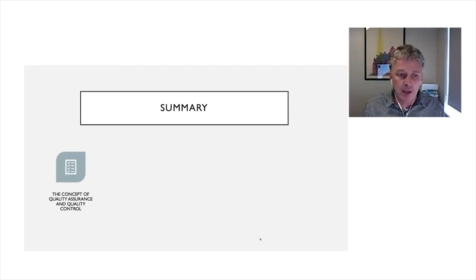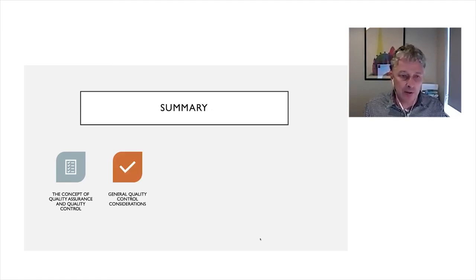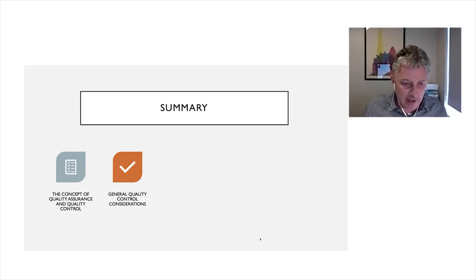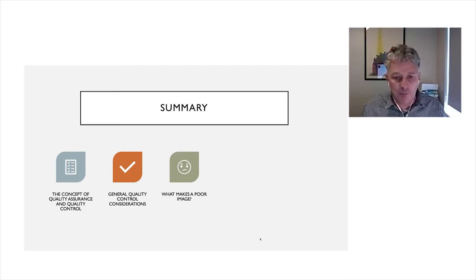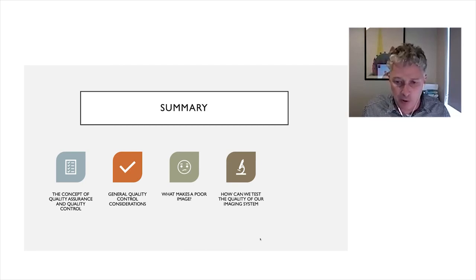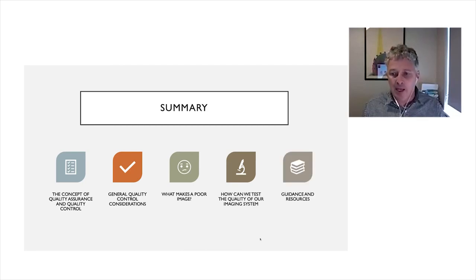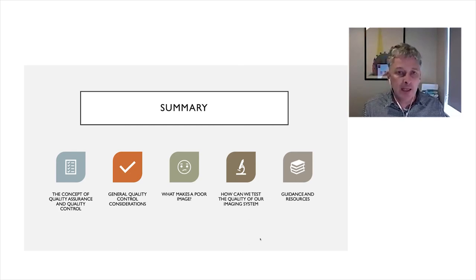In summary, we've gone through the concept of quality assurance and quality control, defined them, and explained why they're important. We've looked at general quality control considerations: pixel size, energy window, radionuclide, whether to use a collimator, and so on. We looked at what makes a poor image before examining how to test to ensure images are not of poor quality. Finally, we went through some of the guidance and resources available to you. Thank you very much for your attention. That concludes this presentation.